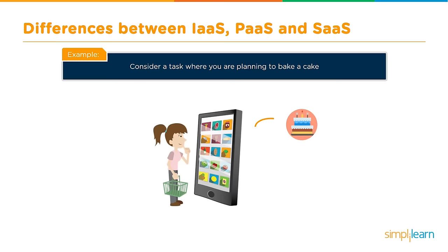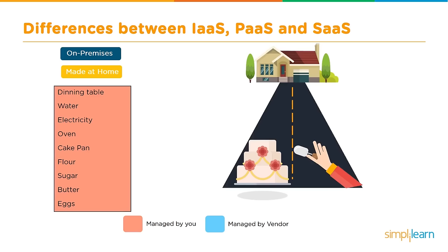Let me also explain the different types of cloud services through an example. Let's say you have a craving for cake and you're planning to bake one yourself. You can make all the ingredients yourself — the flour, butter — put it all together and bake the whole thing yourself using your own oven and pan. Everything is yours, and that's on-premises. All that you use is owned by you, and nothing is managed by the vendor.